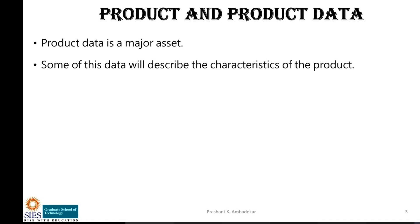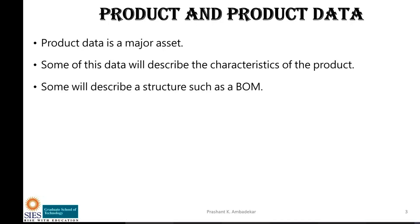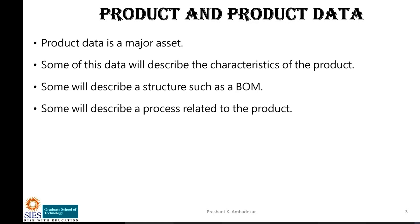This data is an asset to the company. It will sometimes describe the characteristics of the product, or it can be packaging data, labelling data, batch data, or material data. Sometimes the data will describe the structure — such as a bill of material or list of ingredients, for example how to make rasgulla or how to make a spectacle lens. Sometimes the data will describe the process related to the product.